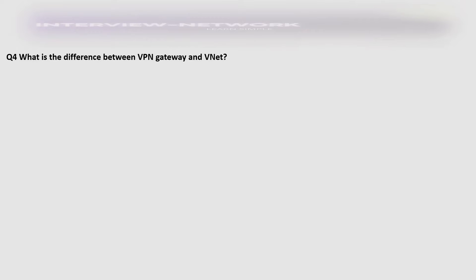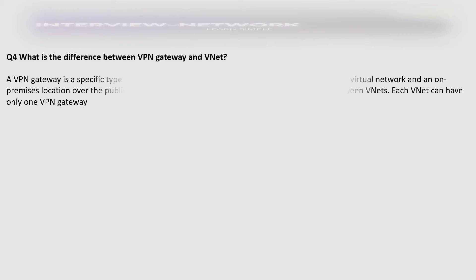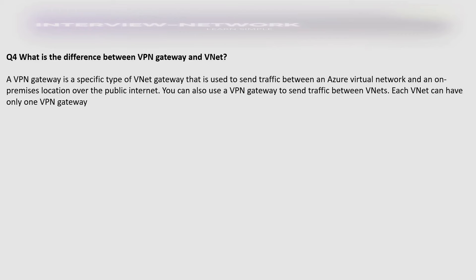What is the difference between VPN Gateway and VNet? A VPN Gateway is a specific type of VNet gateway that is used to send traffic between an Azure Virtual Network and on-premises locations over the public internet. You can also use a VPN Gateway to send traffic between VNets. Each VNet can have only one VPN Gateway.